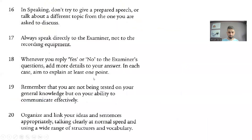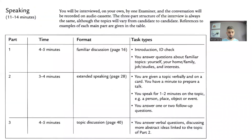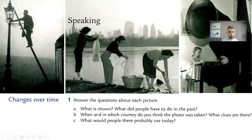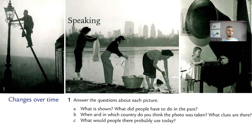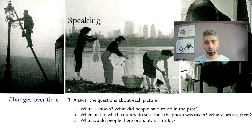So as I've said, this is unit 13 and here there are some photos, some questions about these photos. It's clear they are old photos. What is shown in these photos? What did people have to do in the past, and when and in which country do you think the photo was taken? What clues are there? Clues are details or facts that can tell you about a situation — you can make a guess using these clues. There's also the expression 'I have no clue,' meaning I have no idea, but here the word 'clue' means the details you use to discover a fact.